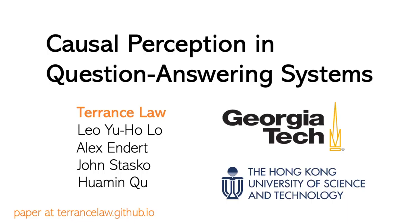I'm Terence Law, and I'm a PhD student at Georgia Tech. Today, I'll be talking about how question-answering systems that provide causal claims can present evidence about correlation to mislead people to make conclusions about causation. You can find the PDF of our paper on my website, terencelaw.github.io.